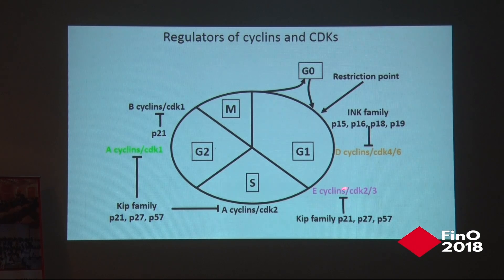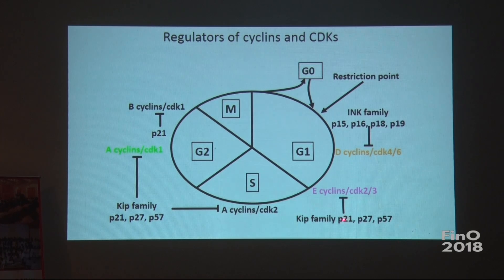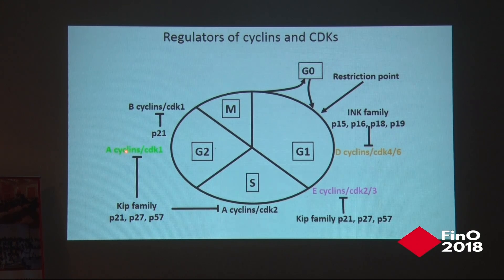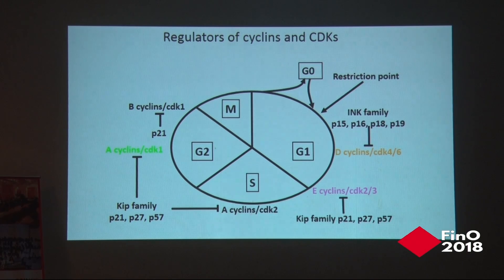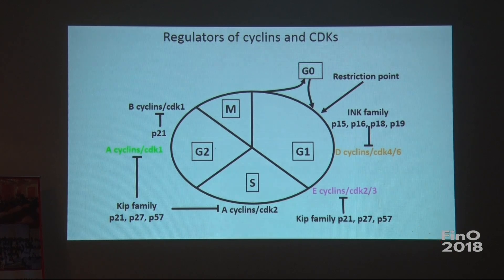This inhibits the formation of cyclin E and CDK2, and the cells are arrested in this phase and not able to go to the next phase of the cell cycle. Kip family proteins P21, P27, and P57 regulate the late phase of G1. Other proteins also regulate the S phase, cyclin A, and CDK1. P21 also regulates B-cyclin and CDK1. This diagram shows that different proteins and gene products regulate the expression of cyclins and CDKs in different phases of the cell cycle, and different combinations of cyclins and CDKs activate different downstream effector proteins, leading to transition into the next phase.